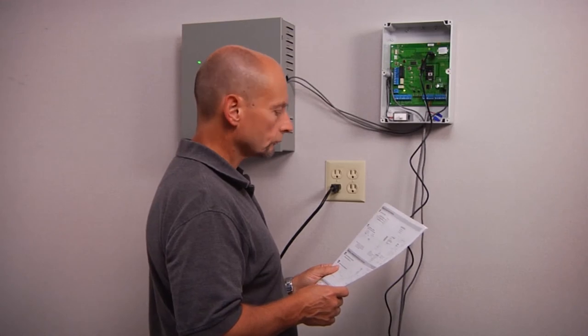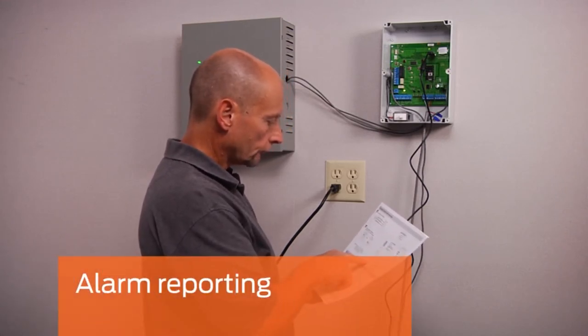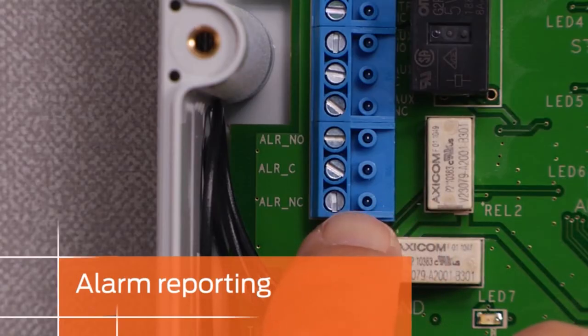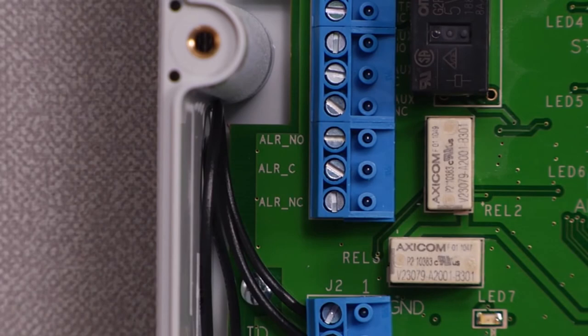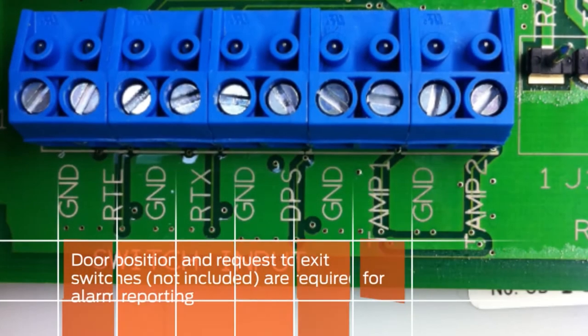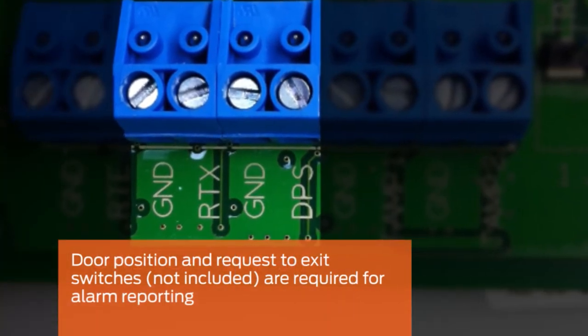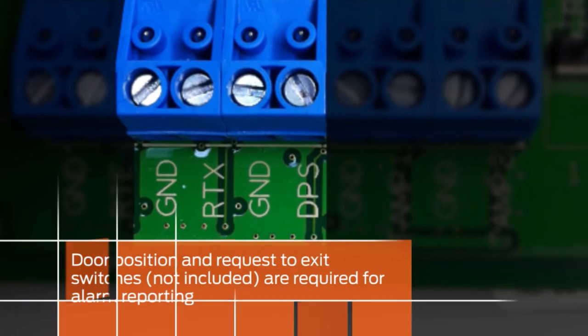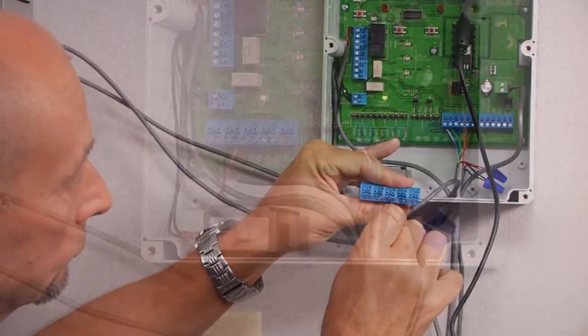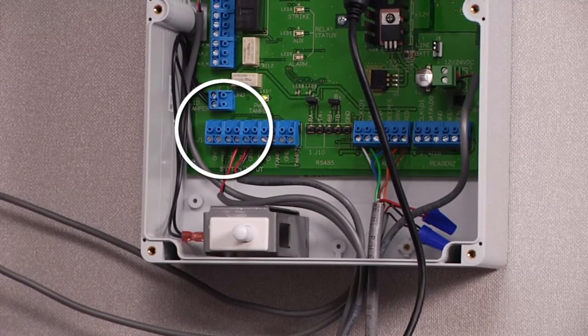The CT5000 can be configured to sound an alarm when the door is forced open or held open. Wiring of the alarm to the CT5000 depends on the alarm type. Consult the user manual for your alarm to determine proper wiring. To detect the alarm condition, a door position switch and a request to exit switch must be connected. After installing the switches, connect the wires to the door position and request to exit switch connections on the CT5000.